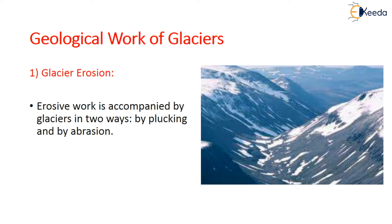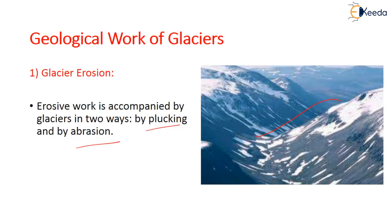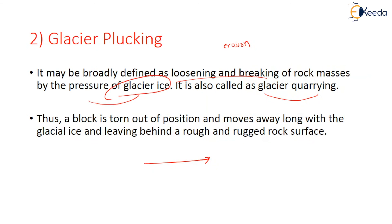Glacier erosion is accomplished in two ways: plucking and abrasion. Glacier plucking is broadly defined as the loosening and breaking of rock masses by the pressure of glacier ice — it is also called glacier quarrying. A block of rock is torn out of position and moves away along with the glacier ice, leaving behind a rough and rugged rock surface.